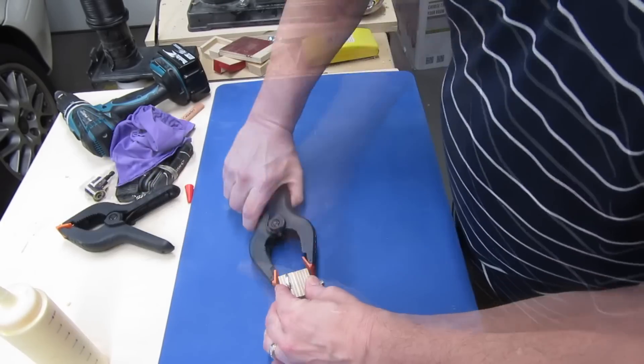I glued the two squares together and left them to dry. While the glue was drying, I made the crankshaft extension.